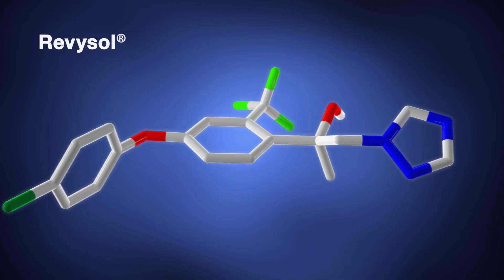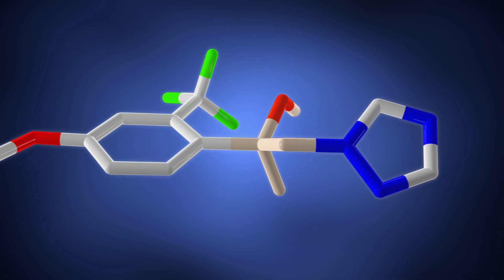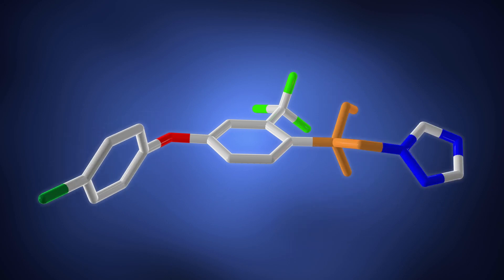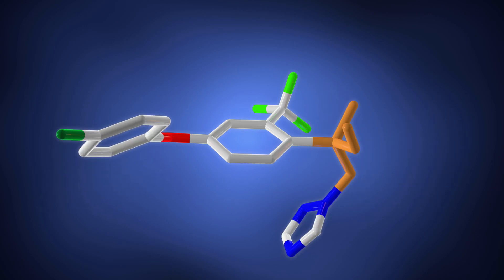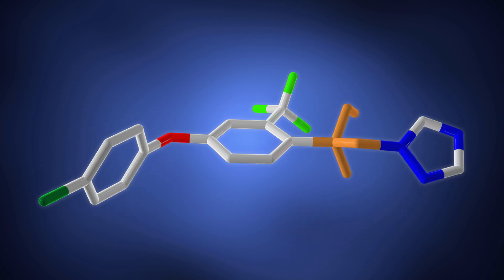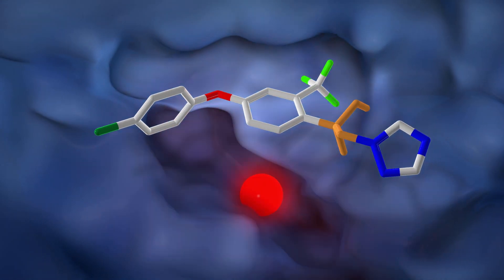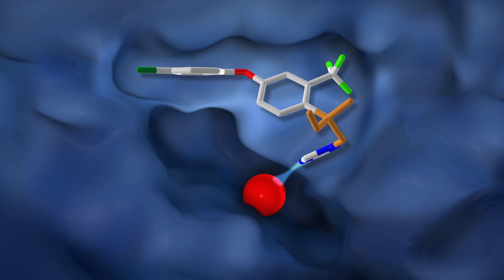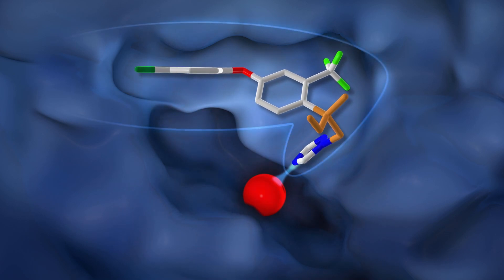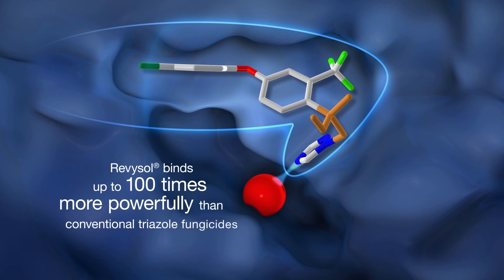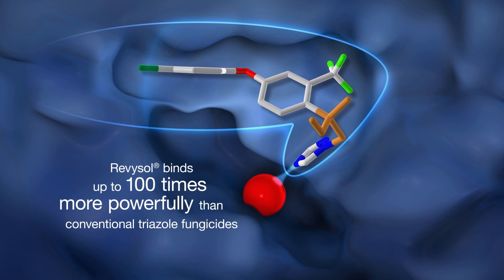In the Revisol molecule, the triazole head sits on the neck of a slim isopropanol unit. This unique chemical constellation allows the molecule to assume different conformations easily — unbound and bound. When Revisol approaches the active site of C14-demethylase, it switches to the bound form, which resembles a flexible hook, resulting in powerful binding properties even when target site mutations have developed.